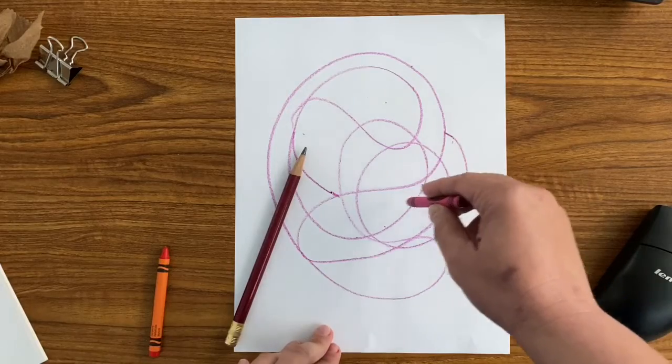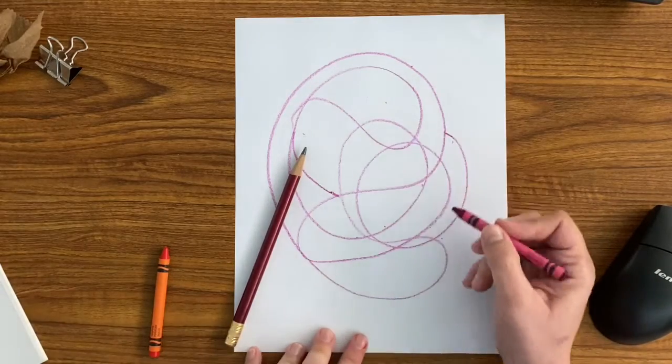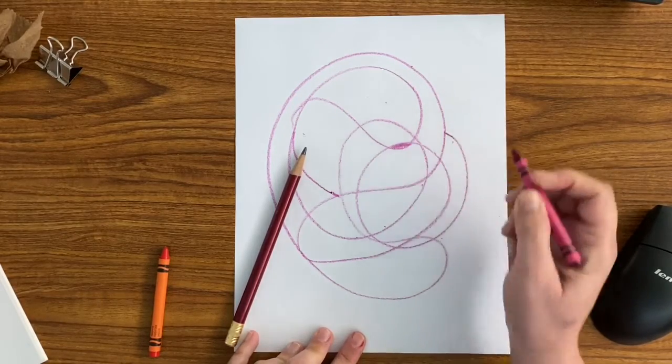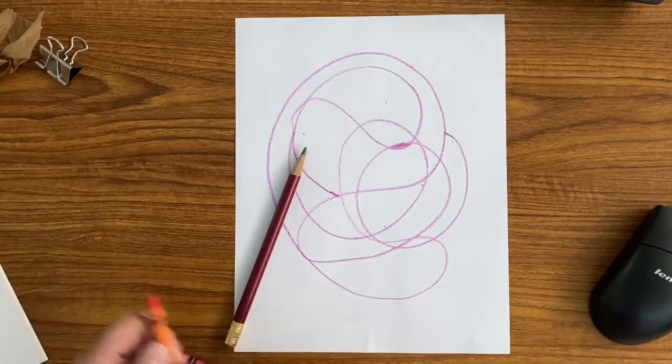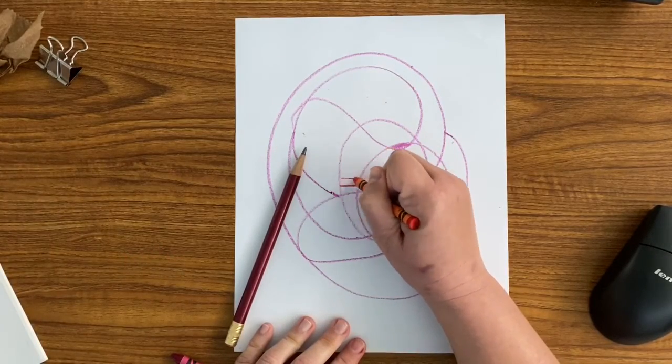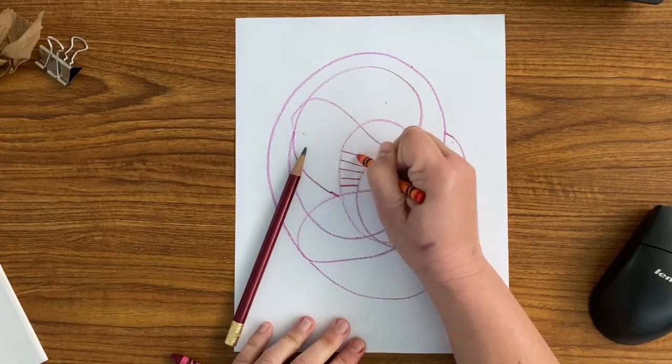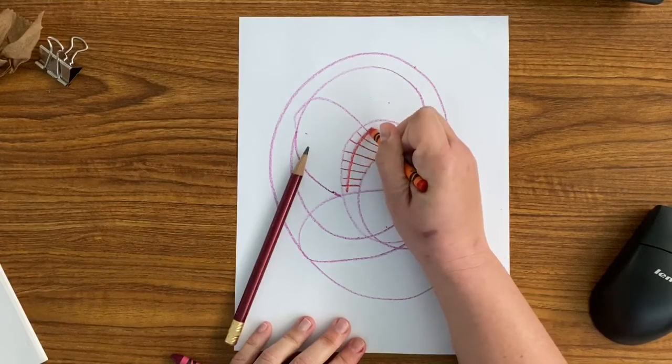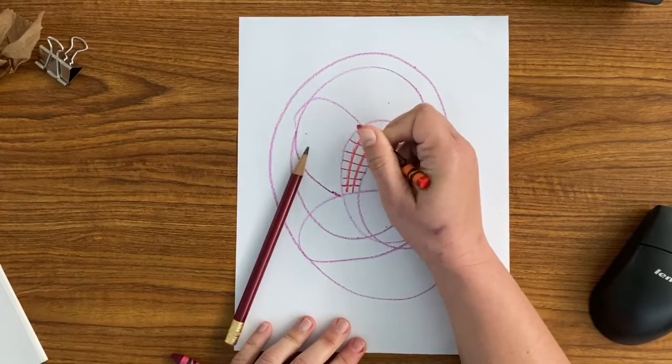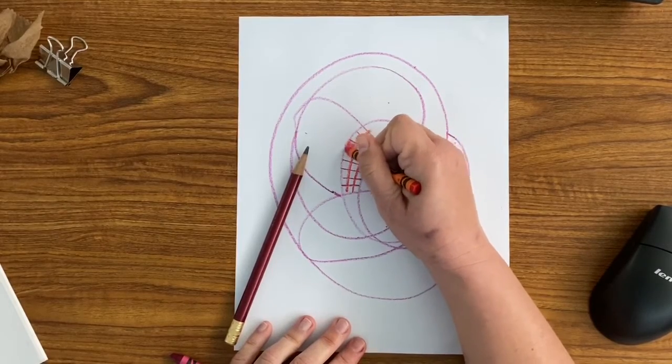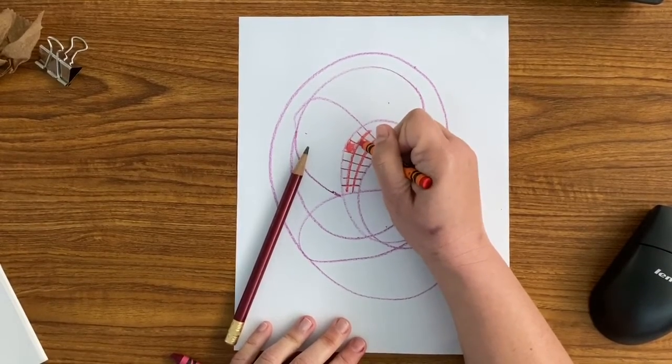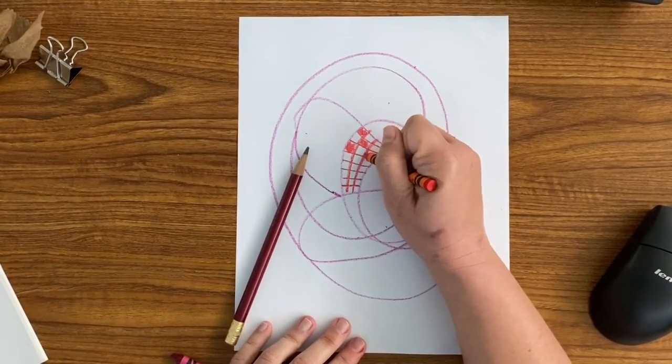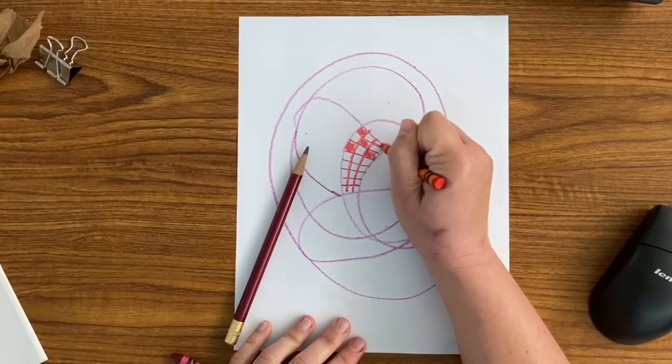You can color in these shapes with the crayon. Just make sure that when you color in, you color carefully and inside within the lines. You can make any type of color or pattern you would like inside the lines and the shapes. Again, this takes a little bit of time.